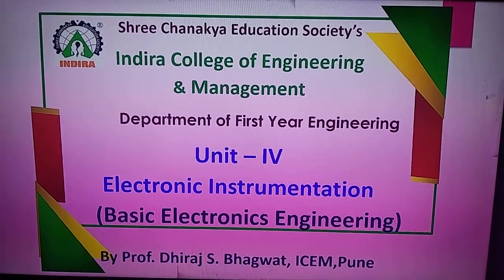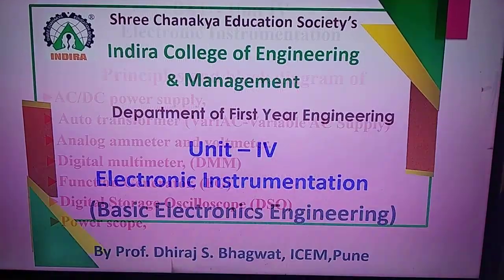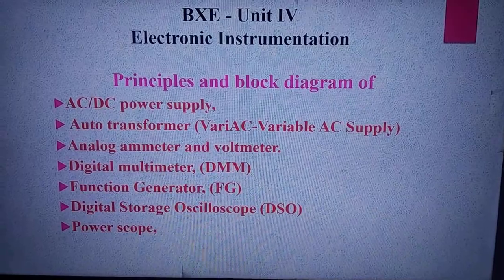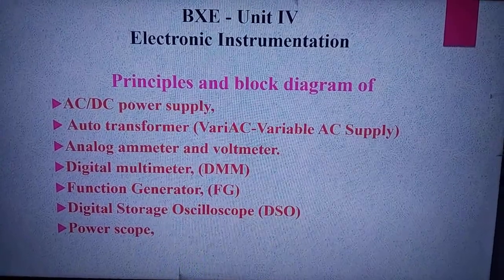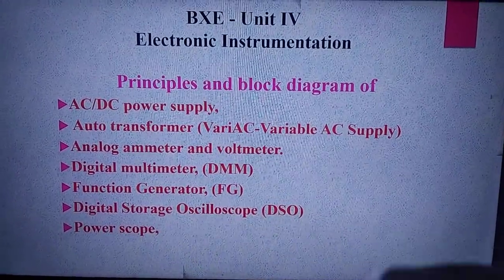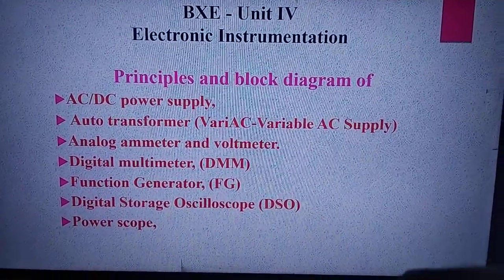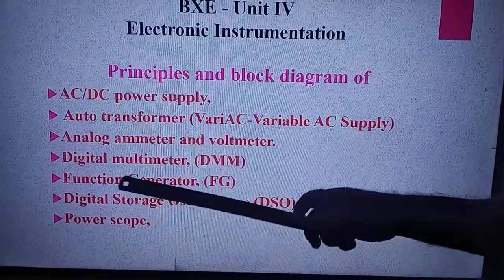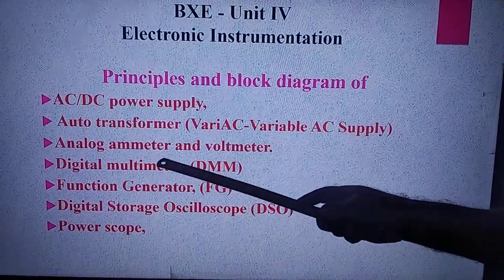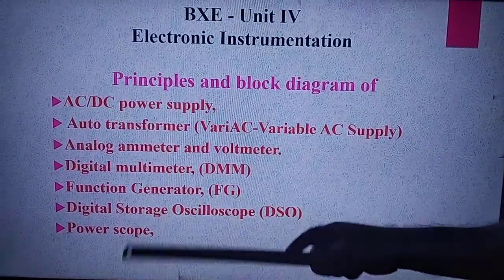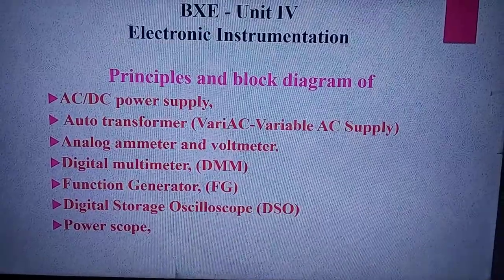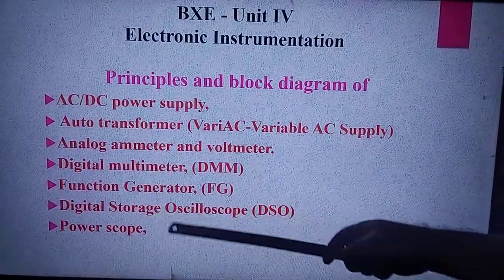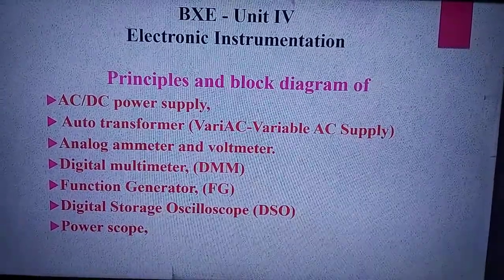Continuing with electronic instrumentation, we will see the next measuring instrument, which is a CRO, and its further types. Up till now we have seen the AC to DC power supply, auto transformer, analog ammeter and volt meter, digital multimeter, and function generator. Now we will see the CRO, then digital storage oscilloscope, and power scope.